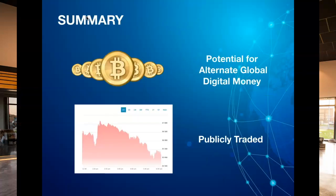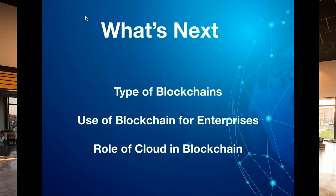To summarize, Bitcoin has a huge potential. It is being viewed as an alternative to fiat money which is not controlled by any fiat system in the world. Now with Bitcoin being publicly traded and more fiat systems starting to recognize it as an alternative digital currency, the future of Bitcoin looks quite interesting. So this concludes our short introduction to Bitcoin and blockchain and how transactions are created and validated in a Bitcoin blockchain network. In our next week's video, we will continue this topic and talk about types of blockchain and how blockchain technology can be used for enterprises and the role of cloud in creating blockchain applications.